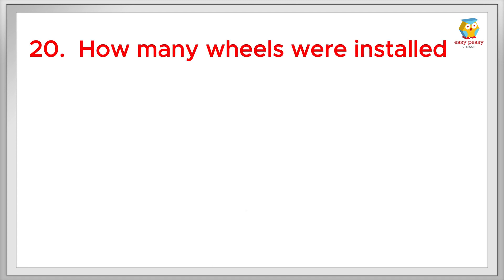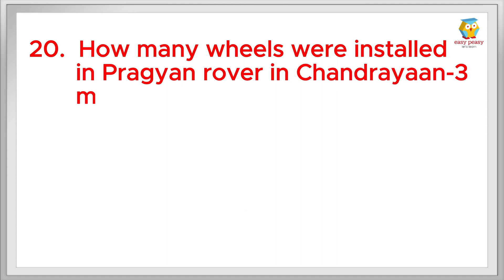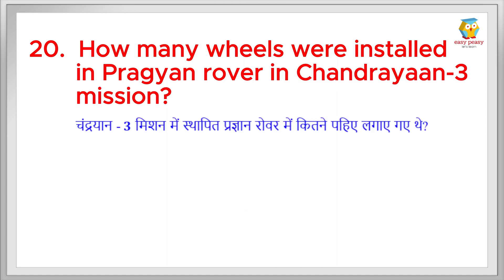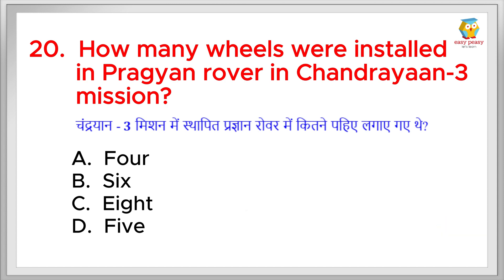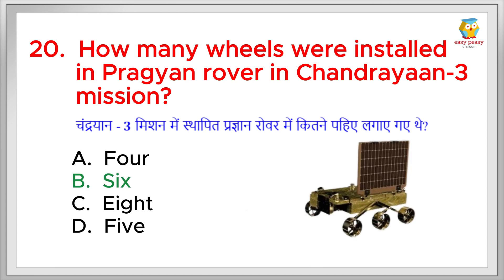How many wheels were installed in the Pragyaan rover in the Chandrayaan 3 mission? Chandrayaan 3 mission mein sthapit Pragyaan rover mein kitne pahiye lagay gaye the? The right answer is 6 wheels.